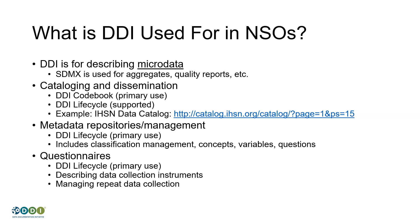With DDI Codebook, the biggest use in national statistical organizations is dissemination. If you're going to use Codebook, it's really for cataloging available datasets and describing them for end users, so they can take the micro data, know what it is, know how to work with it, and are able to operate on it using tools. Adrian will show you a little bit of that, but Alina is going to talk in detail about DDI Codebook.